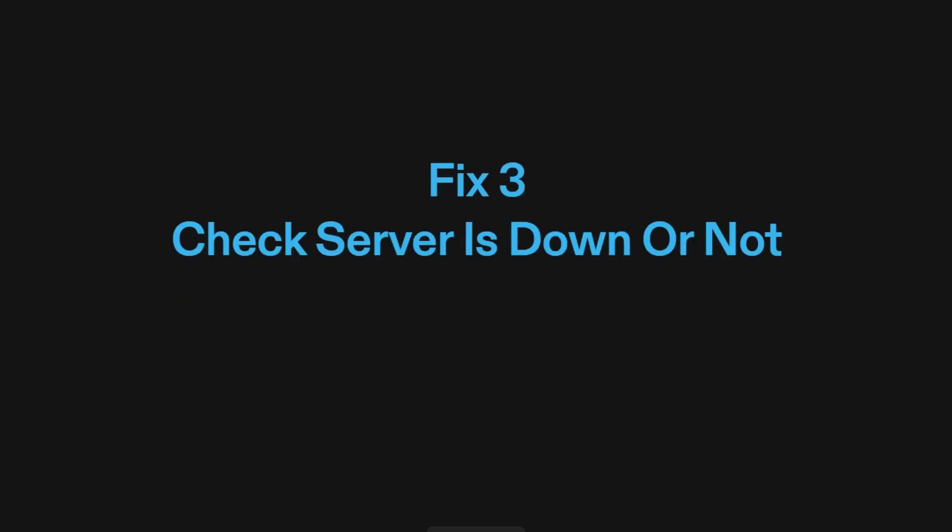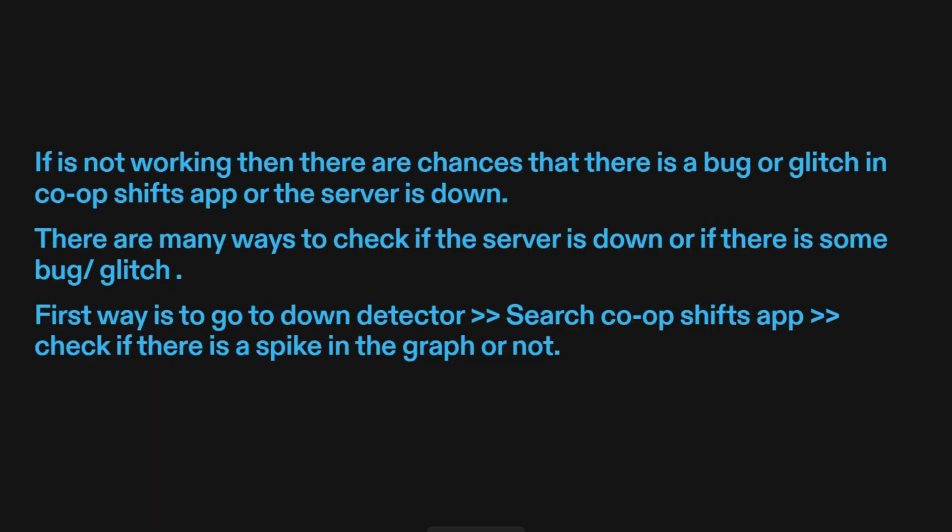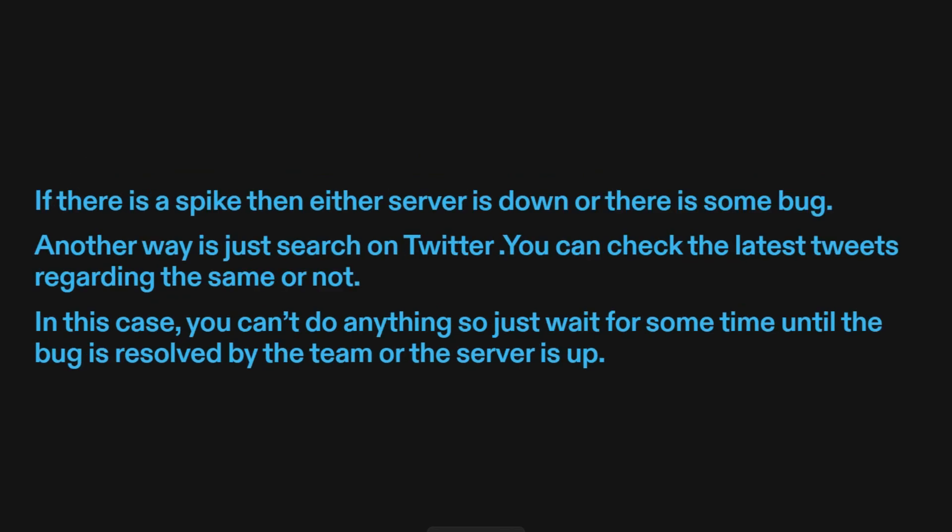Fix three: check if the server is down or not. If it's not working, there are chances that there is a bug or glitch in Co-OpShift's app, or the server is down. There are many ways to check this. First, go to Down Detector, search Co-OpShift's app, and check if there is a spike in the graph. If there is a spike, then either the server is down or there is some bug.